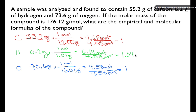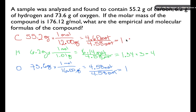We need to multiply 1.34 by something to get a whole number. Multiplying by 2 won't give us a whole number, but multiplying by 3 will — 1.34 times 3 gives us 4. If we multiply the hydrogen value by 3, we have to do the same for carbon and oxygen. So the ratio of carbon to hydrogen to oxygen becomes 3 to 4 to 3.